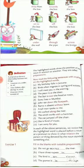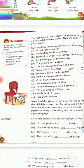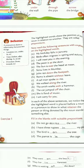The highlighted words show the position of one noun in relation to another. They tell us what is the position of one noun in relation to another when two nouns are given. These words are called prepositions.